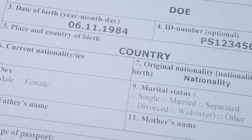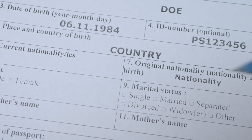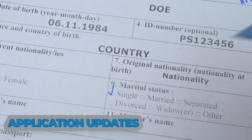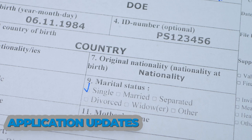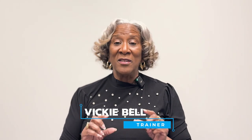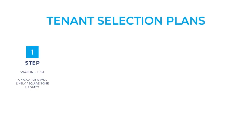The application — even though HOTMA did not say for you to change your application, you are going to have to change it because there's so much information you need to know about the assets and about them being students that you won't be able to complete a good certification without having that information. Understand that even though it's not written anywhere, if you look at the other changes to the income, to the asset, to the deductions, you will have to tweak your applications a little.